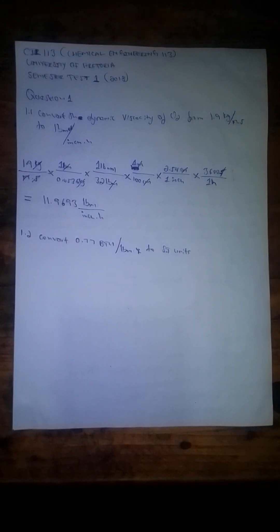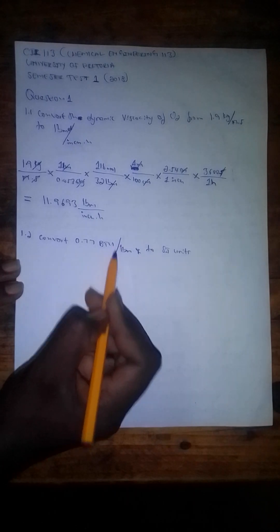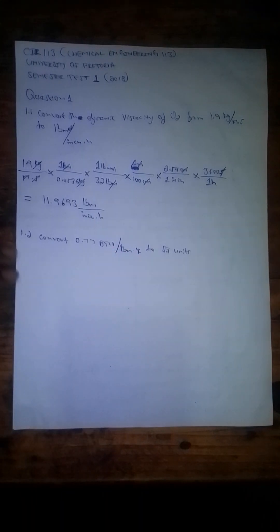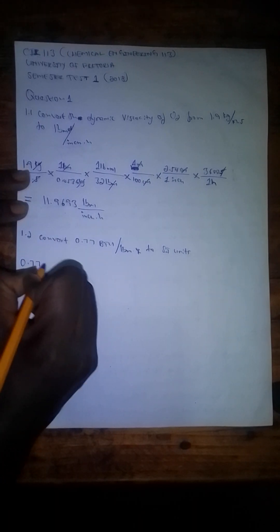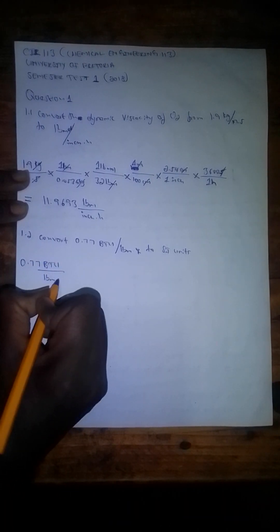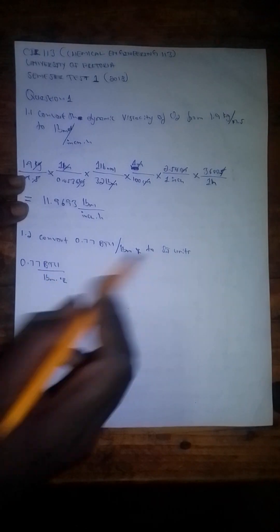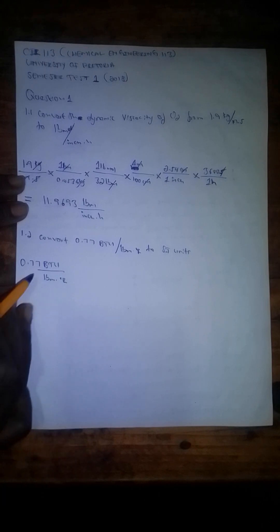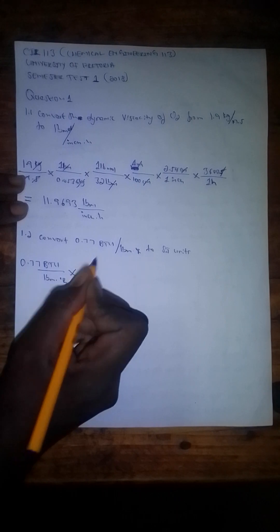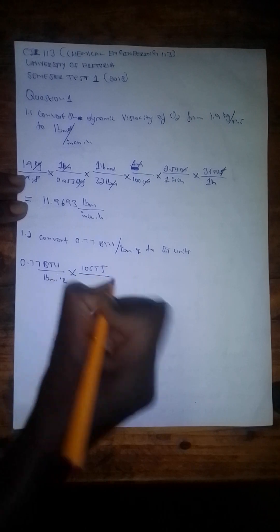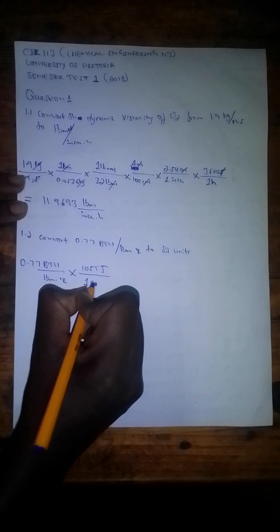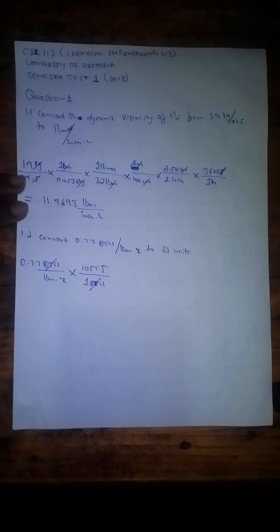Question 1.2 says convert 0.77 BTU per pound mass degrees Rankine to SI units. This is a heat capacity unit — BTU is energy, pound mass is mass, and degrees Rankine is the temperature change. Starting with BTU: the SI unit for energy is Joules, and we know 1055 Joules equals 1 BTU. We multiply by 1055 Joules over 1 BTU, which cancels the BTU, leaving Joules per pound mass degrees Rankine.